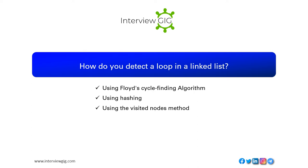How do you detect a loop in a linked list? Using Floyd's cycle-finding algorithm, using hashing, or using the visited nodes method.